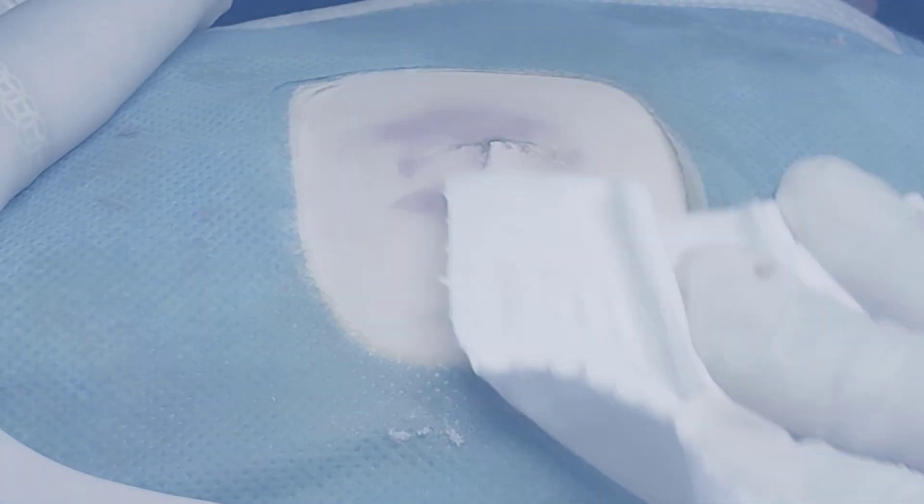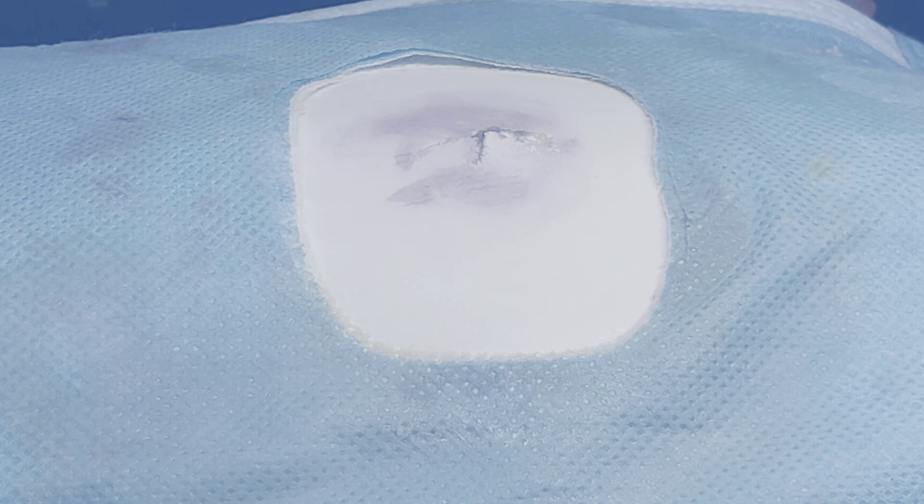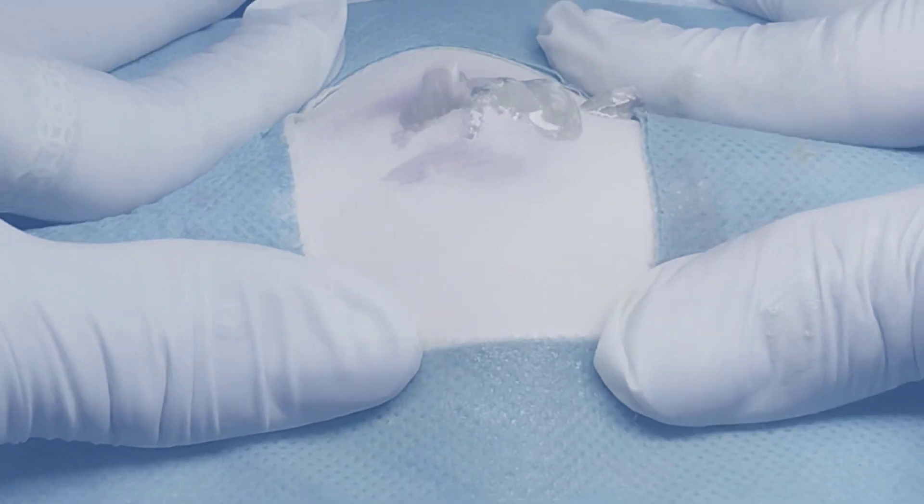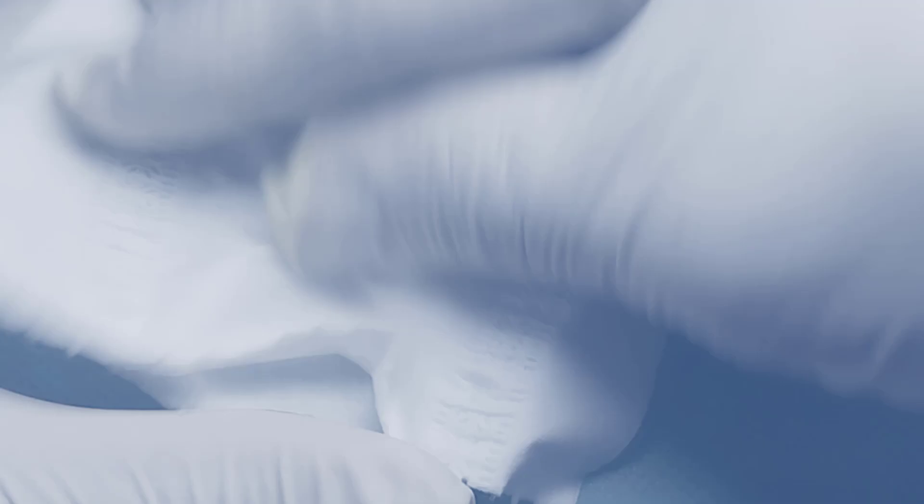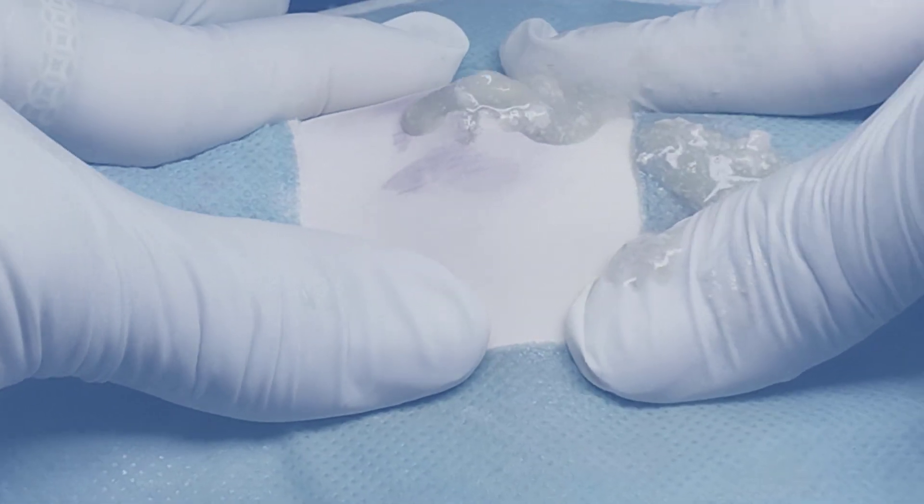First is Neutrogena Hydro Boost. There are two forms of this Hydro Boost, a water gel for oily skin types and a gel cream for more dry skin types. Now, only the gel cream is fragrance-free, so that's important to note if you have sensitivity to fragrance or you just prefer fragrance-free products. This is a lightweight yet super hydrating moisturizer.